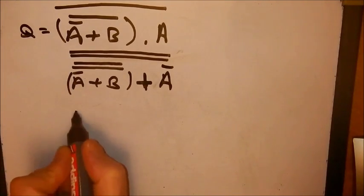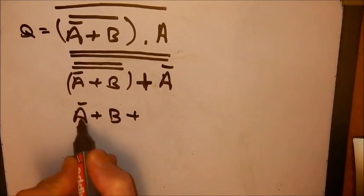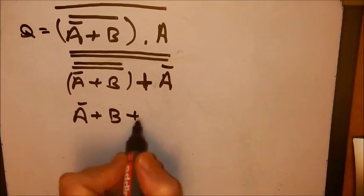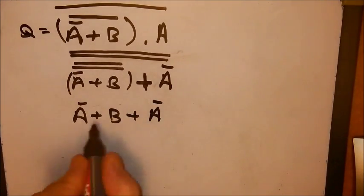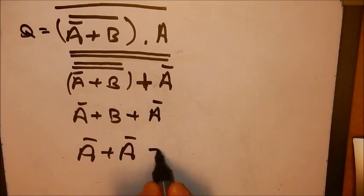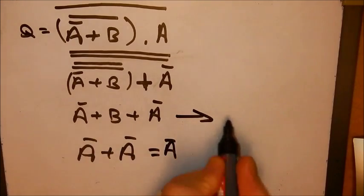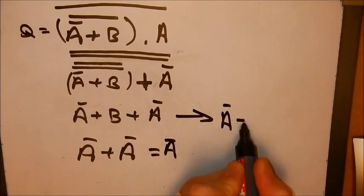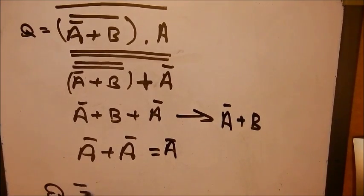Straight away you can see that that allows us to simplify this quite a bit due to the double knotting to become NOT A, ORed with B, ORed with NOT A. Now NOT A ORed with NOT A is simply going to equal NOT A. Therefore this then finally becomes NOT A ORed with B. So we're going to say that Q is equal to NOT A ORed with B.